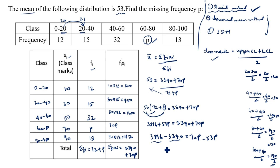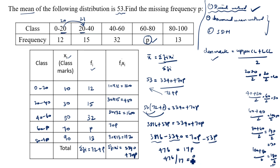Subtracting: 476 = 70p − 53p = 17p. Therefore p = 476 / 17 = 28. So the missing frequency p is equal to 28. Thanks for watching this video.